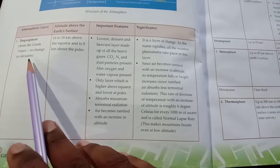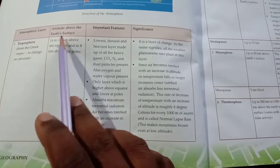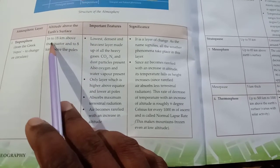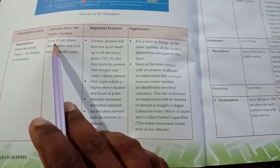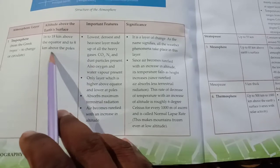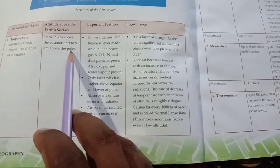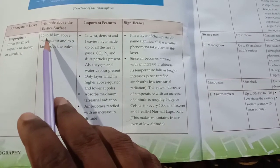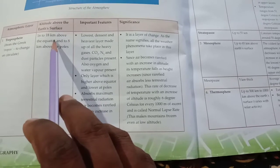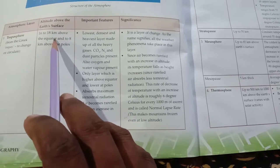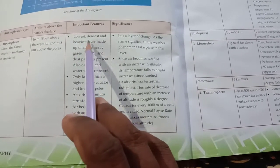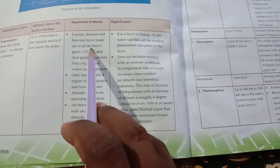Altitude means the height above the Earth's surface. The troposphere is found at a height of 16 to 18 kilometers above the equator and 8 kilometers above the poles. It is the lowest, densest, and heaviest layer, made up of all the heavy gases.